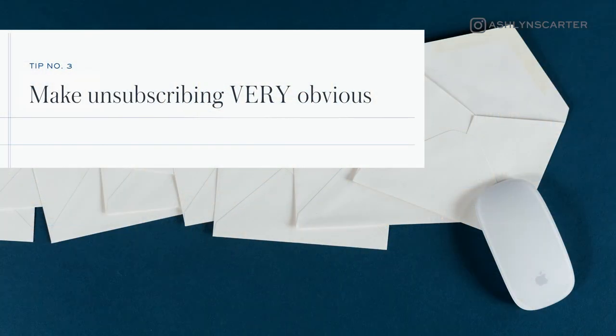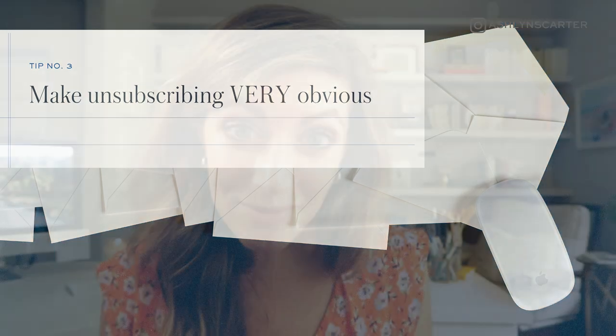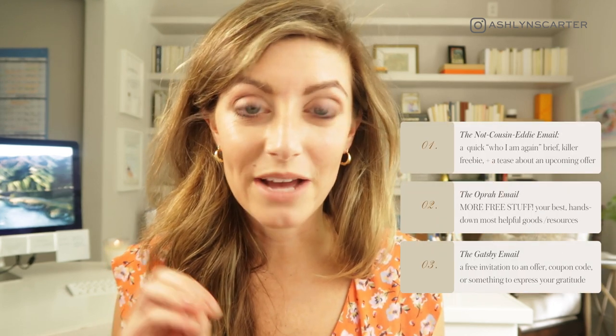Tip number three: make unsubscribing super duper obvious. If unsubscribing is hard to find, that will just tick people off and you will not be making any friends. It definitely needs to be in the footer copy of any email to adhere to CAN-SPAM law. But in an email sequence like this, when it's been a minute, it can be even more of an olive branch if you put it right there in the body copy saying, 'If you don't want to hear from me anymore, click here to unsubscribe' — same link as the one in the footer. So your first email should be short and sweet with a roundup of useful tools or content, and you've made that unsubscribe link very clear.